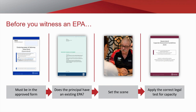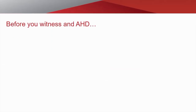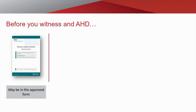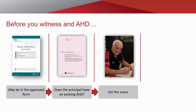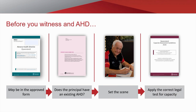The same principles apply when witnessing an AHD. First, check that the AHD is in the approved form — currently Form 4 version 5. Remember though, an AHD may be in this approved form. Ask the principal if they have an existing AHD in Queensland or in another state or territory; if they do, explain that making a new AHD could affect the validity of the existing one. Recommend the principal seek independent legal advice about the effect of making a new document. If the principal wishes to proceed, make a note of this in your logbook, then set the scene and conduct the capacity assessment.